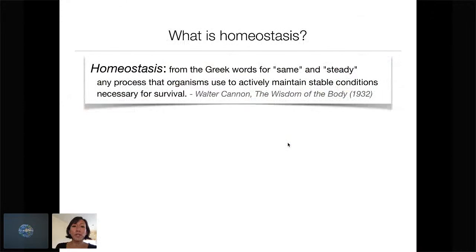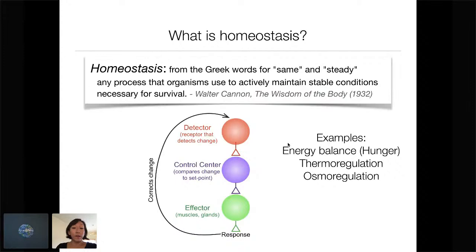Things are really coming together for the first time. I want to start with a term you're probably already familiar with: homeostasis — from the Greek for 'same and steady,' referring to any process organisms use to actively maintain stable conditions necessary for survival. There are several rich bodies of work in neuroscience dissecting homeostatic systems for energy balance, hunger, thermoregulation, and osmoregulation.